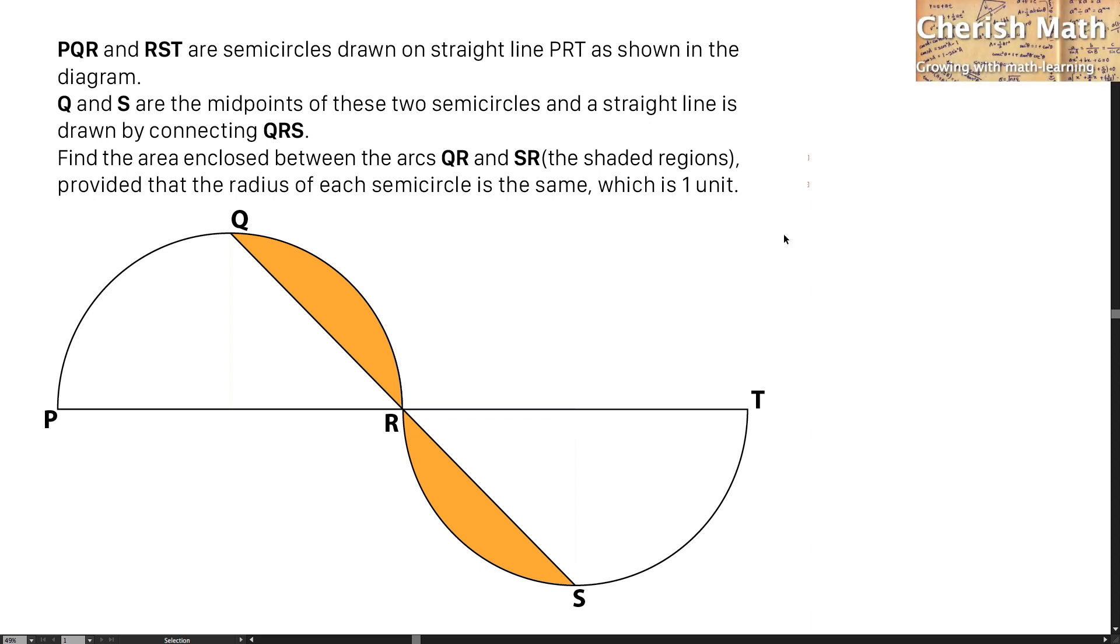Hi from Cherish Math. This is the question. PQR and RST are semicircles drawn on straight line PRT as shown in the diagram.